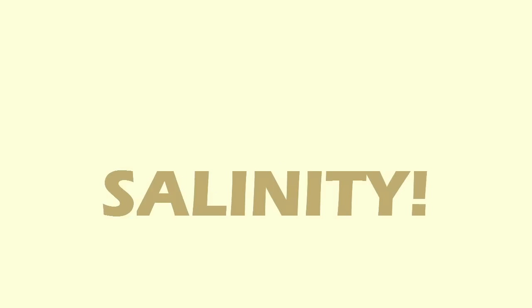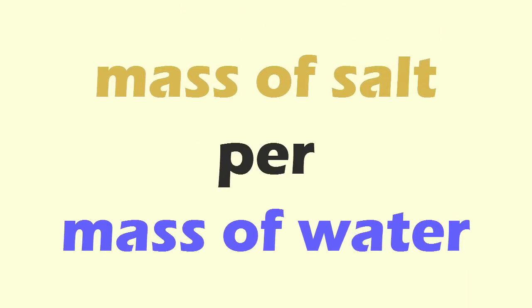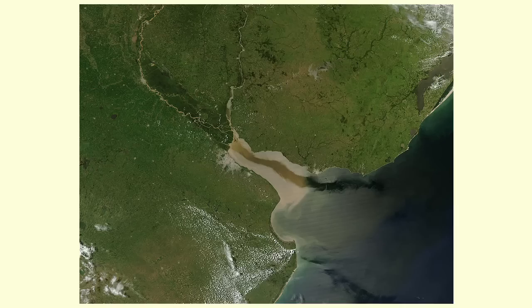Another factor that has influence on density is salinity, which is the measure of dissolved solids in water. It is affected by several factors. Some of them, like precipitation, hitting by the sun, iceberg melting, and river runoff, make the seawater lighter.